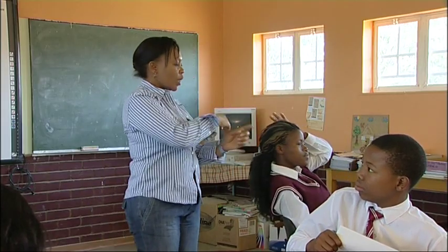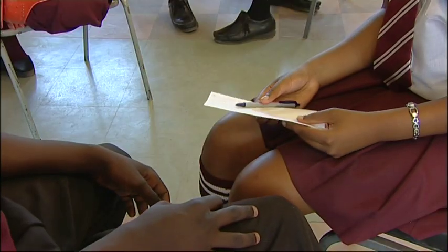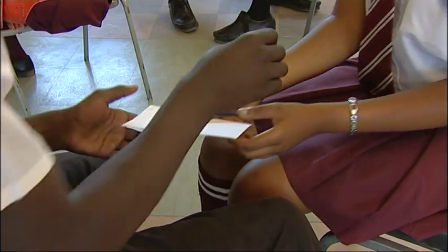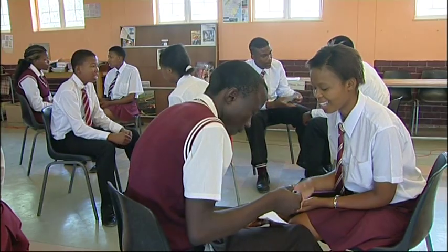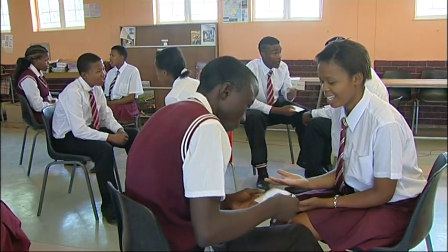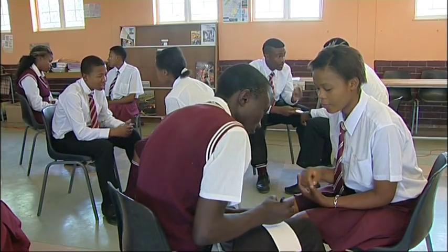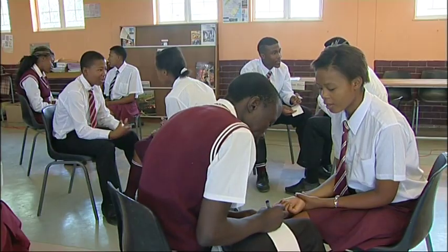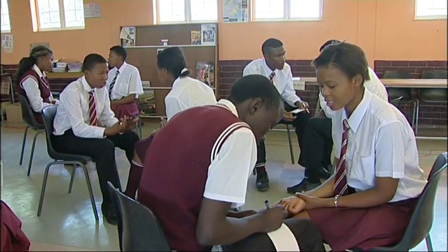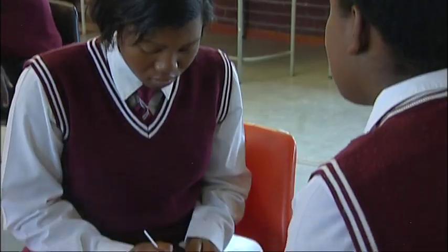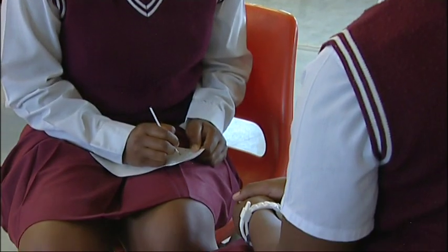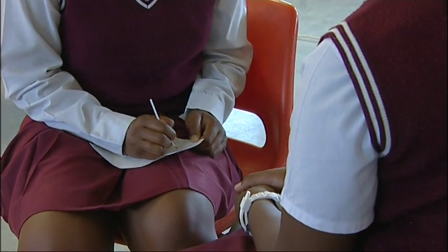After three minutes, player one and player two swap roles. Now player two in each pair must give reasons why he or she thinks that he or she would be a not-so-perfect entrepreneur, while player one in each pair writes down all the reasons provided by player two.